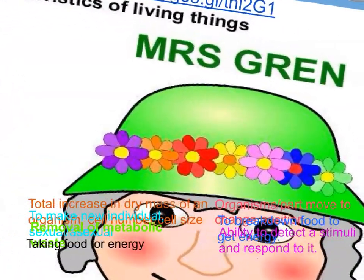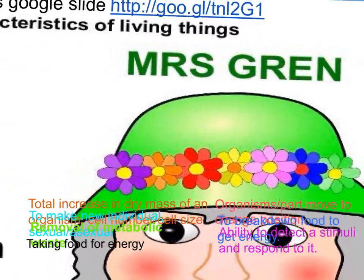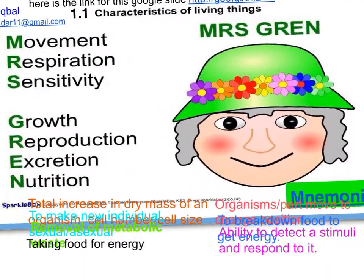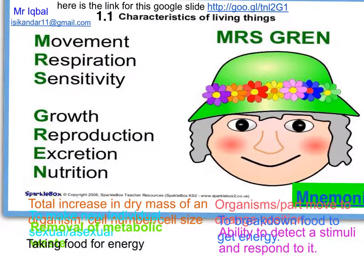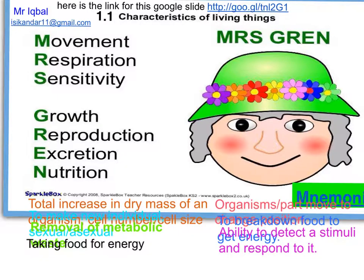To remember these seven basic characteristics of life, we developed a mnemonic called MRS GRANT, where M stands for movement, R for respiration, S for sensitivity, G for growth, R for reproduction, E for excretion, and N for nutrition.